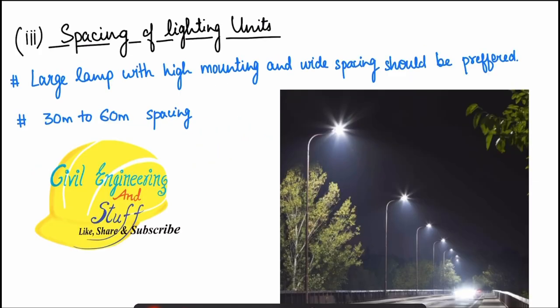Next is the spacing of lighting units. For large lamps, high mounting with wide spacing is best so that maximum utilization of the light source is achieved. In general, 30 to 60 meters spacing is used.